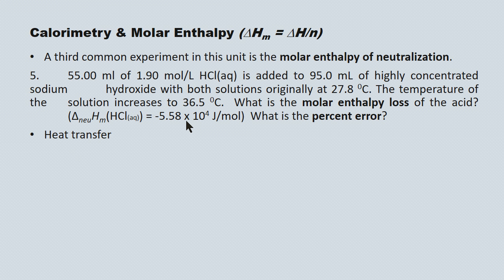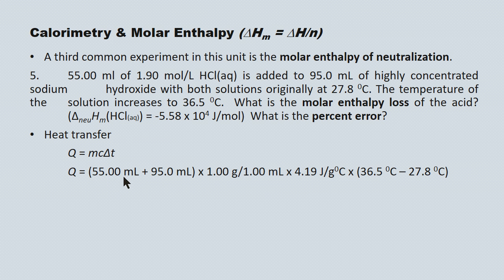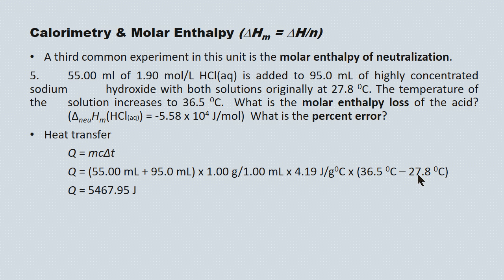First, determine the heat transfer into the surrounding solution: Q equals MC delta T. You're mixing two volumes together — 55.00 mL and 95.0 mL — so the surrounding mass of water is determined by adding those two volumes and converting into grams. We have 55.00 mL plus 95.0 mL times the density factor of 1 gram per milliliter. The surroundings in neutralization problems represents the total volume mixed together. Multiplying by the specific heat capacity of water and the change in temperature gives a Q value of 5467.95 joules. The enthalpy change is equal and opposite, so the neutralization loses 5467.95 joules.